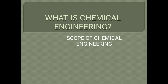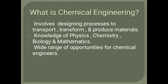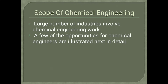Today we are going to discuss what is chemical engineering and the scope of chemical engineering. Chemical engineering is defined as an engineering discipline that involves designing processes to transport, transform, and produce materials. It is a vast field and involves the knowledge of physics, chemistry, biology, and mathematics to design these processes.